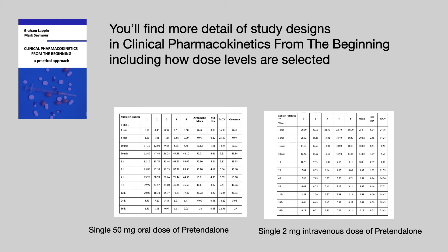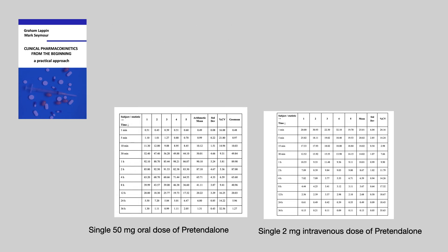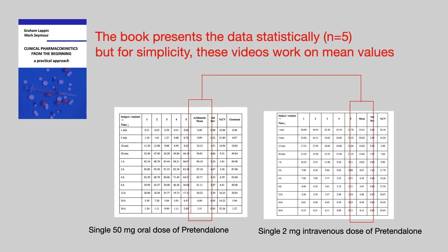The textbook presents the data statistically over 5 subjects. In these videos, we're going to simplify matters and we're going to use just the mean data to calculate the pharmacokinetic parameters. It just makes the explanations a little more simple.